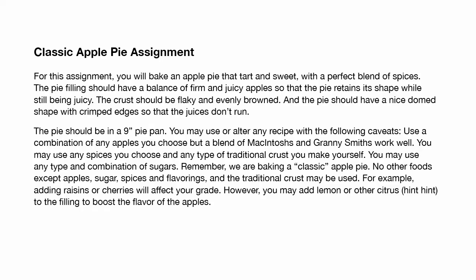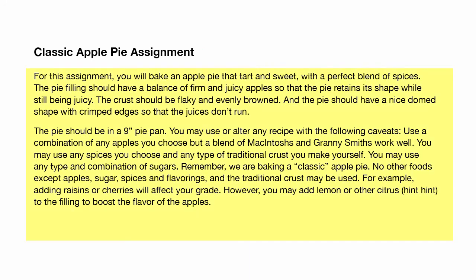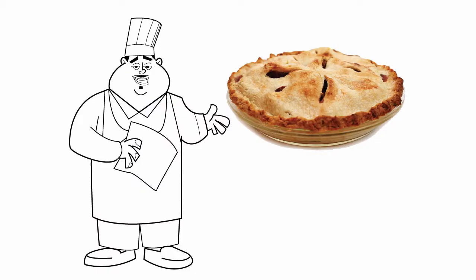So how do you build a rubric? First, you add a title. Then, the second part consists of the assignment or task. In our example, we want students to bake a pie that is delicious and attractive.